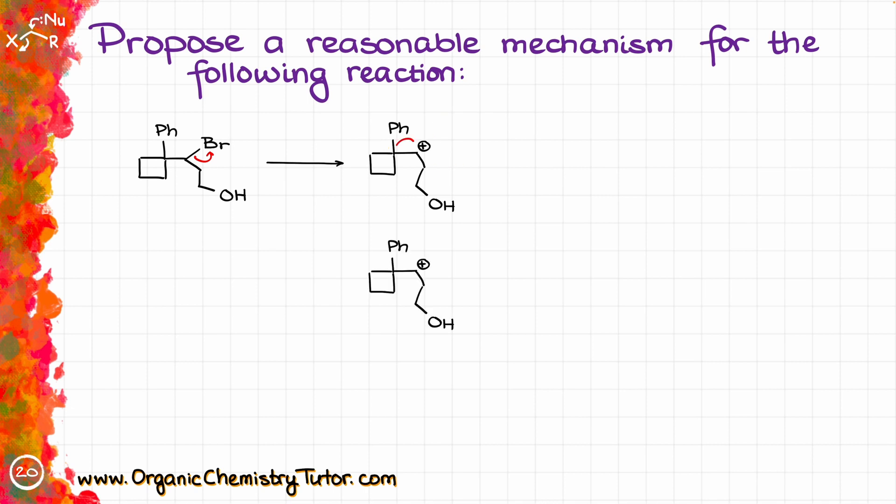If I go with the phenyl shift like this, I would end up with this new tertiary carbocation. However, if I go with ring expansion like this, we end up with a tertiary carbocation as well. Now we have a five-membered ring tertiary carbocation versus a four-membered ring tertiary carbocation.